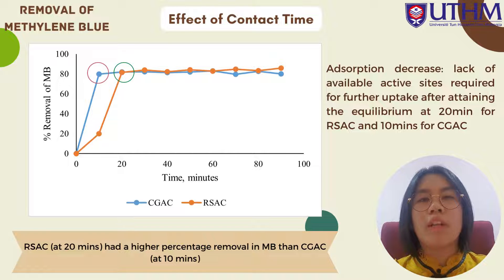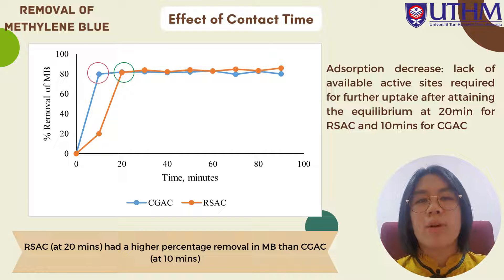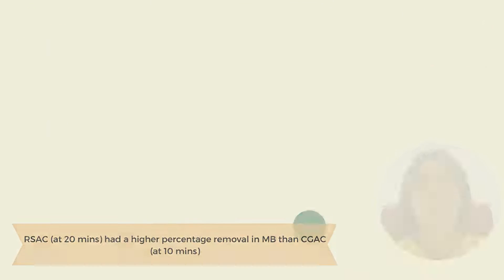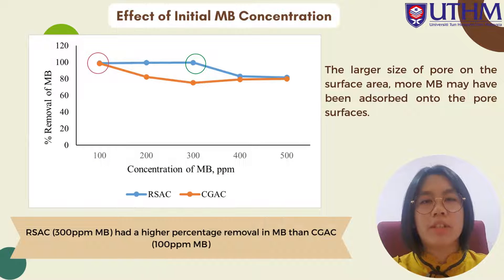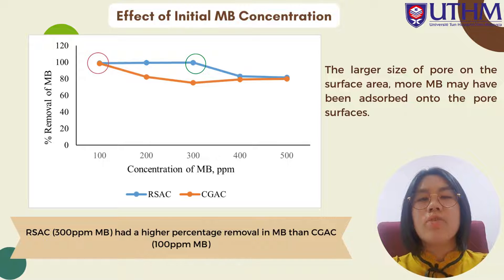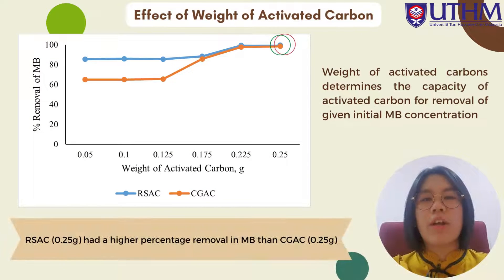First are the results for the effect of contact time on Methylene Blue removal. Near the end of the experiment, adsorption decreased, which may be due to the lack of available active sites required for further uptake after attaining equilibrium at 20 minutes for rice straw activated carbon and 10 minutes for Citronella grass activated carbon. These results show that rice straw activated carbon had a higher percentage removal of Methylene Blue than Citronella grass activated carbon. Next are the results for the effect of initial Methylene Blue concentration. Citronella grass activated carbon adsorbed more at lower Methylene Blue concentrations and reached maximum adsorption faster than rice straw activated carbon. The larger pore size on the surface area of rice straw activated carbon means more Methylene Blue may have been adsorbed onto the pore surfaces. This result shows that rice straw activated carbon at 300 ppm had a higher percentage removal than Citronella grass activated carbon at 100 ppm.